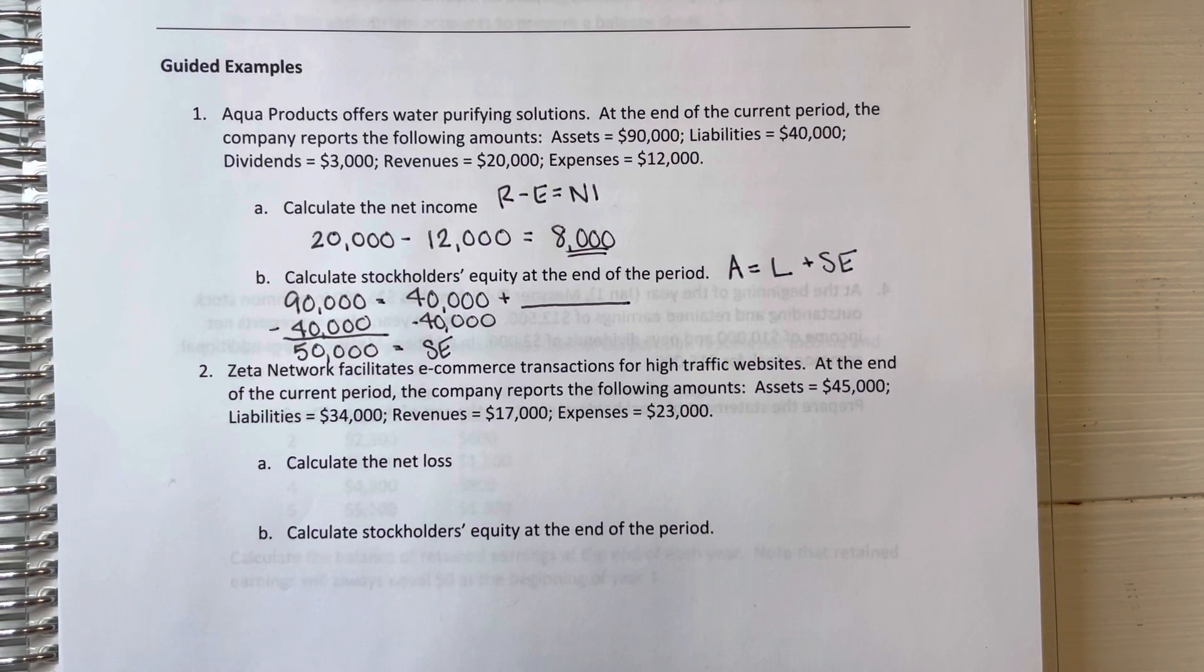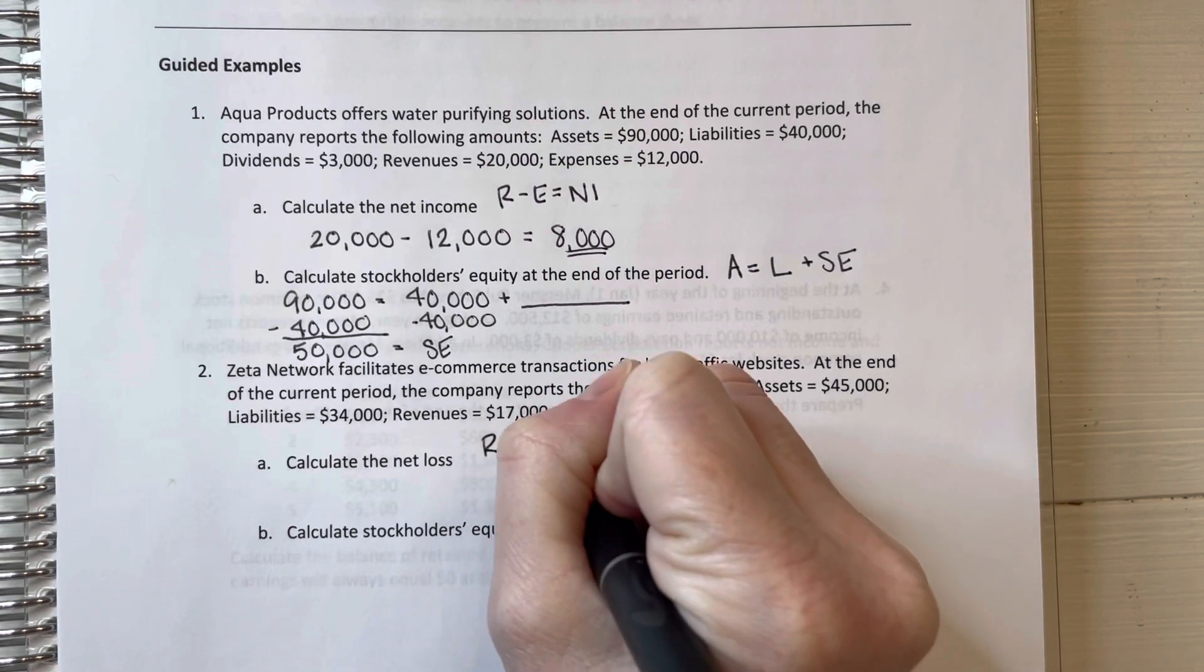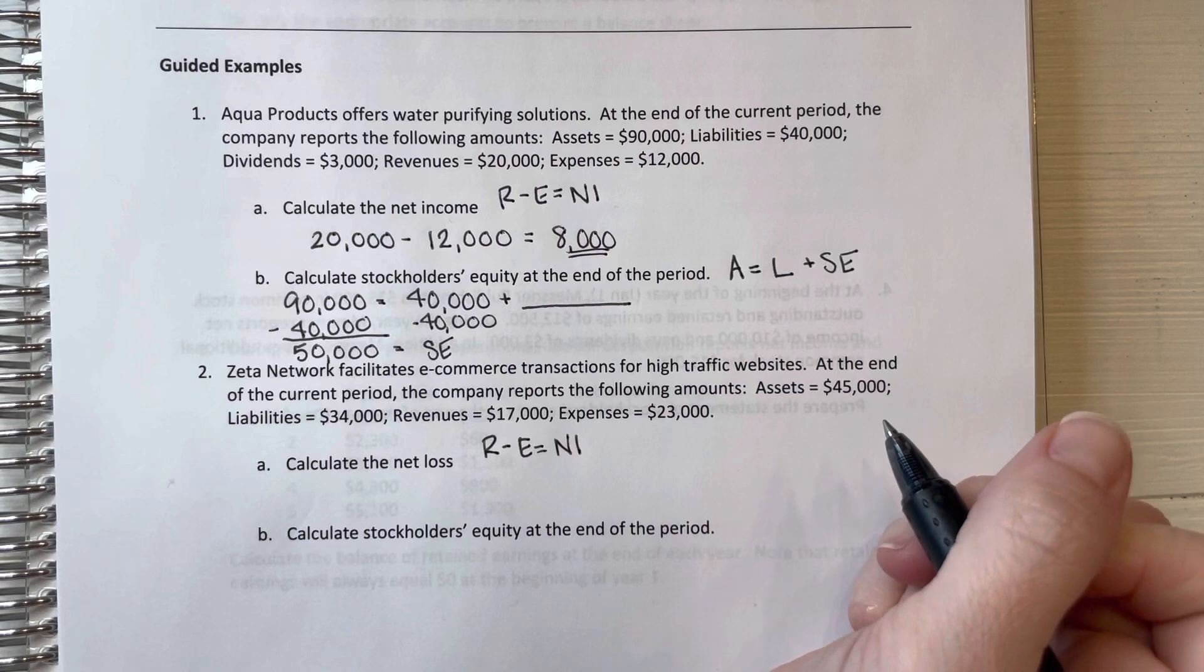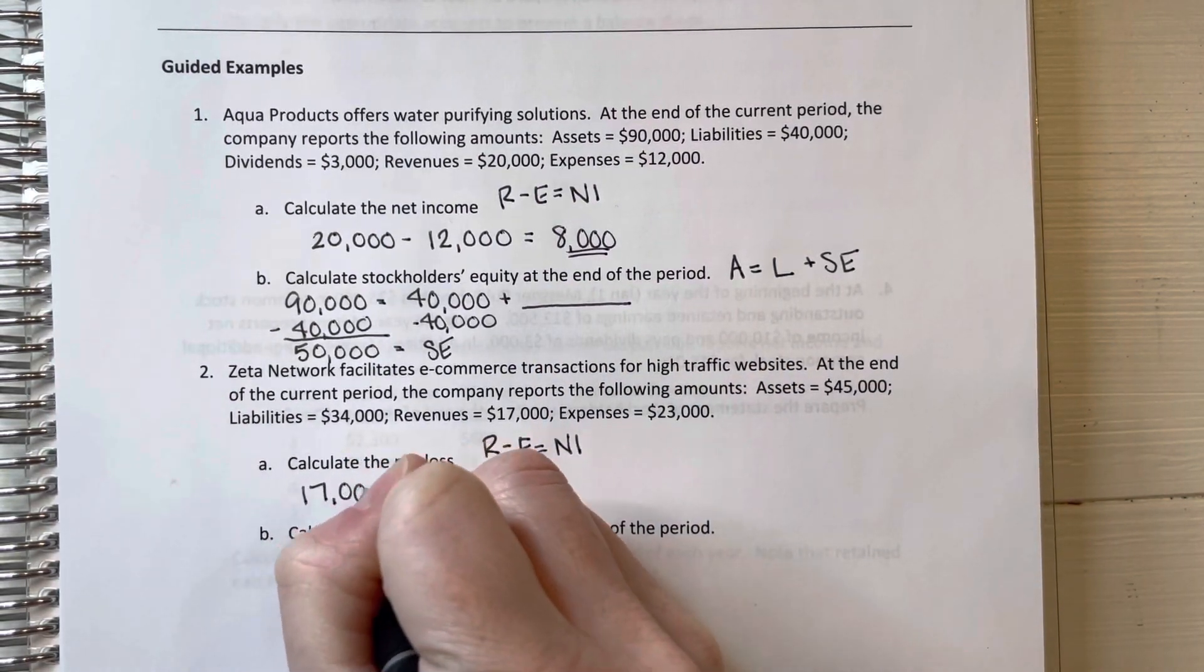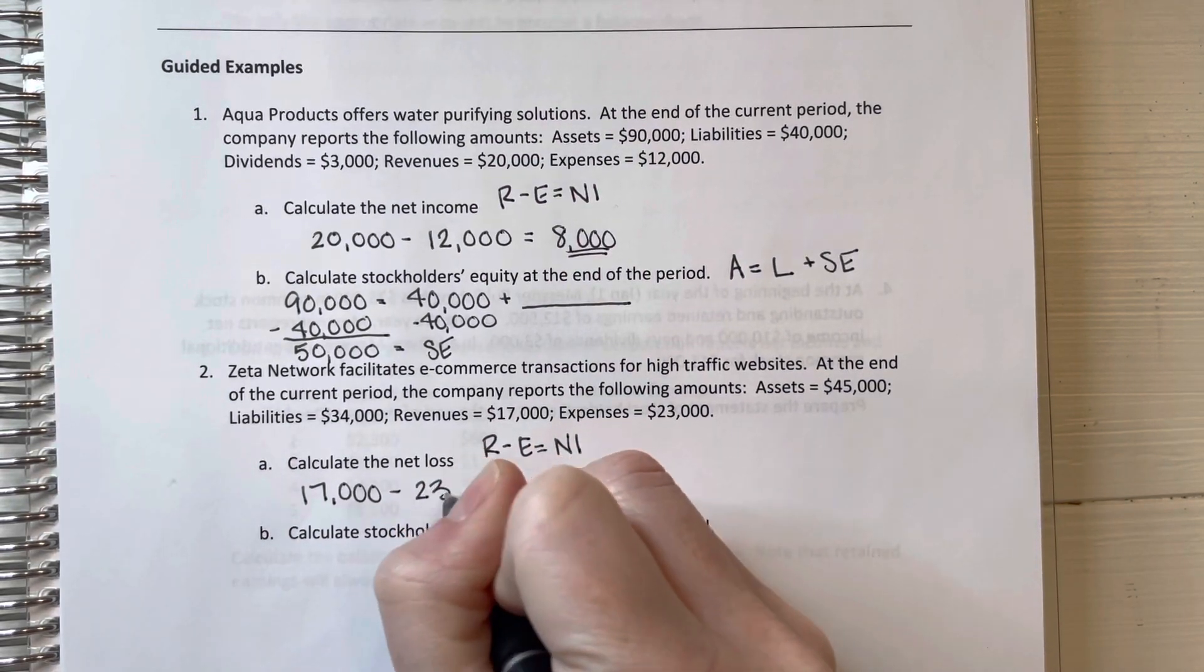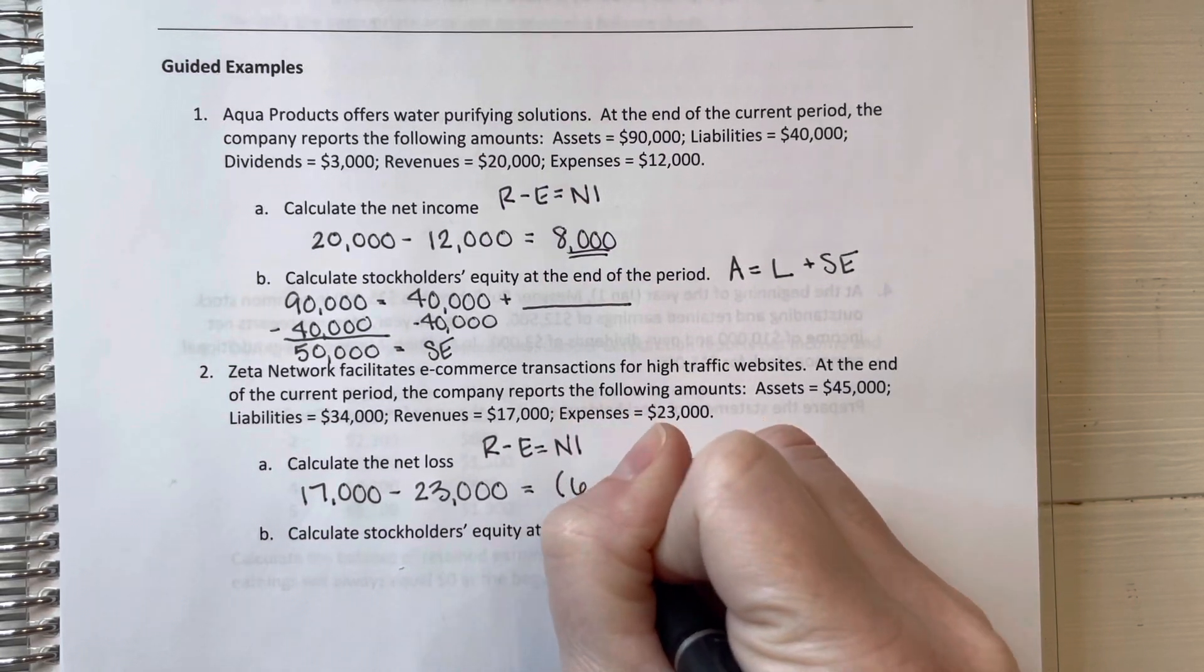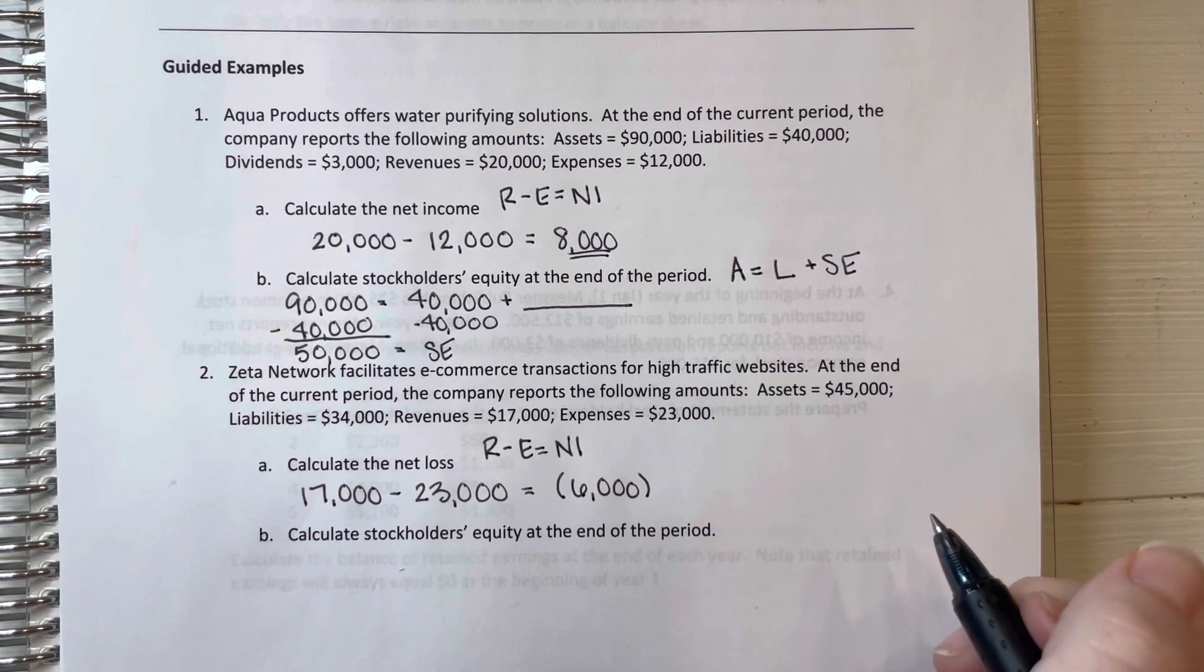First, we're going to calculate the net loss. Now a net loss is just where your expenses are higher than your revenues. Your net income is basically going to be a negative number. So we can still use revenue minus expenses equals net income. It's just that our net income is going to be negative in this example. So our revenues are $17,000. Our expenses are $23,000. So we're going to end up with a net loss of $6,000. In accounting, we put our negative numbers inside parentheses.